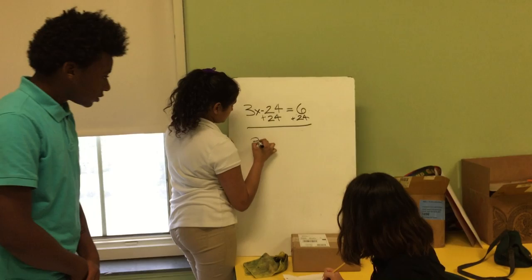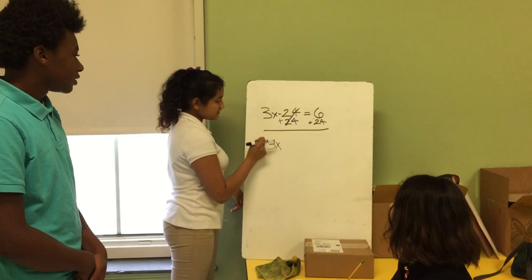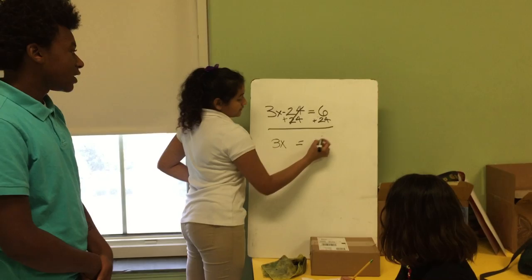You got to bring your 3x down. And then we're going to cross out this because negative 24 plus 24 equals 0. So we're going to bring down our 3x. And then we bring down the equal sign. And you got to do 24 plus 6 equals 30.